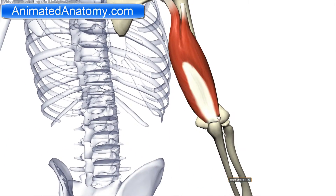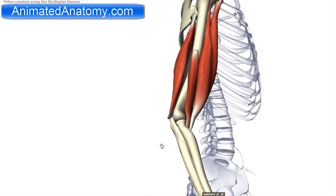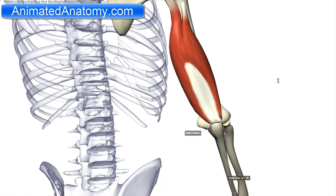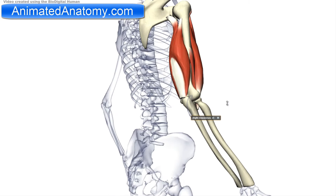When this muscle contracts, it is going to pull the ulna back and make the forearm extend. However, looking at it from here, it is obvious that when it contracts it is also going to adduct the arm towards the body.